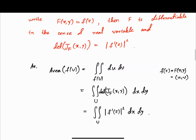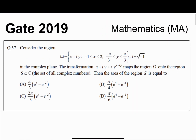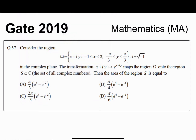So the answer is pi by 3 times (e^4 minus e^(minus 2)). Option A matches this result, so option A is correct and all other options do not match.